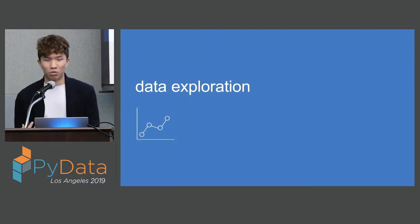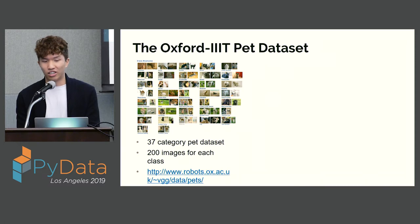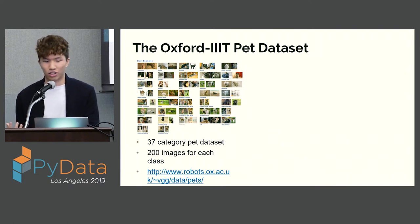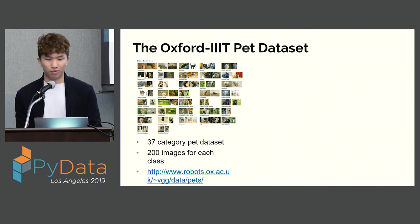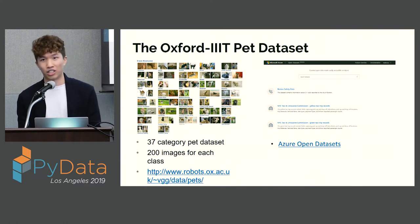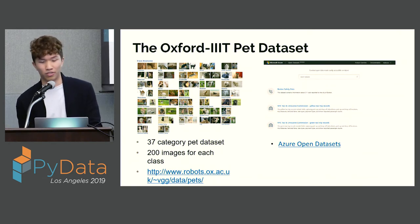For data exploration, we're going to use a dataset called the Oxford Pet Dataset — an open source dataset from Oxford University. It has 37 categories of different dog and cat breeds, with around 200 images per class. I like this dataset because you get to look at cute dogs and cats all day. Microsoft also publishes many of these open source datasets on Azure Open Datasets so that anybody can find them, including the Oxford Pet Dataset.